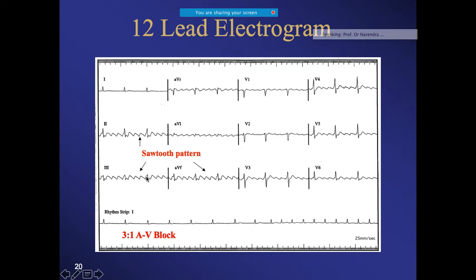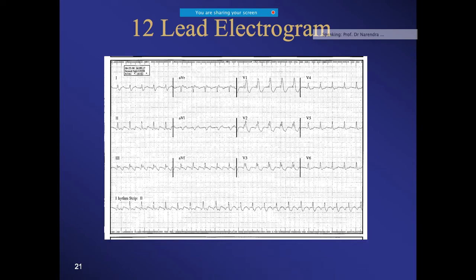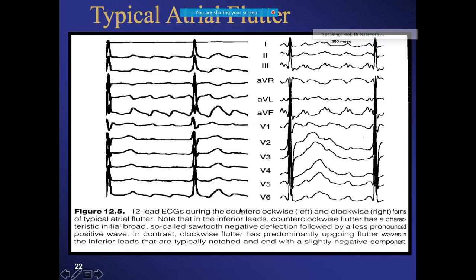Looking at this ECG, you can see the sawtooth pattern with regular RR intervals. It is important to differentiate this from 3:1 AV block, which may look similar but lacks the sawtooth pattern. That distinction is very important.